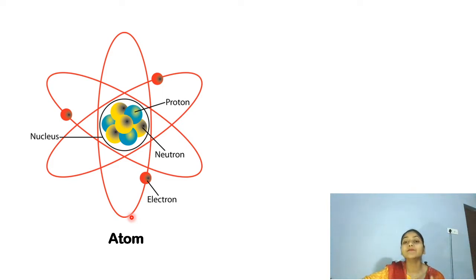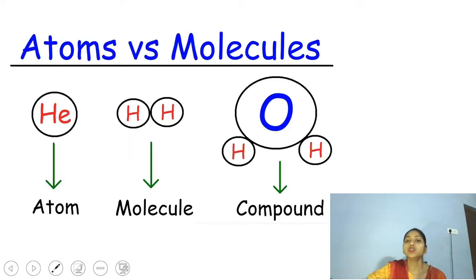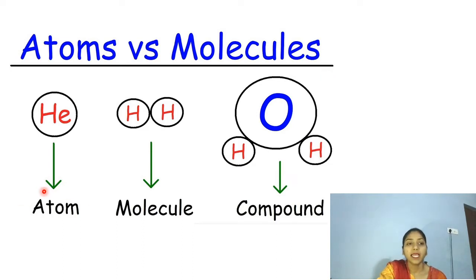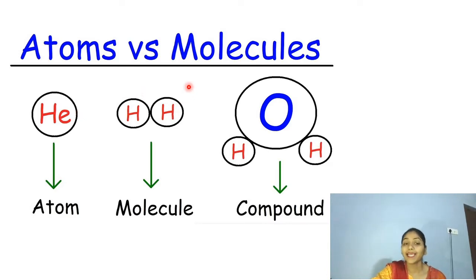Therefore, atoms combine. The new term here is molecules. What do you mean by molecules? Here is a figure showing atoms versus molecules. You can see an atom of helium — a single atom. Here you can see atoms of hydrogen. When atoms are connected with each other, they become molecules. So atoms combine to form molecules.